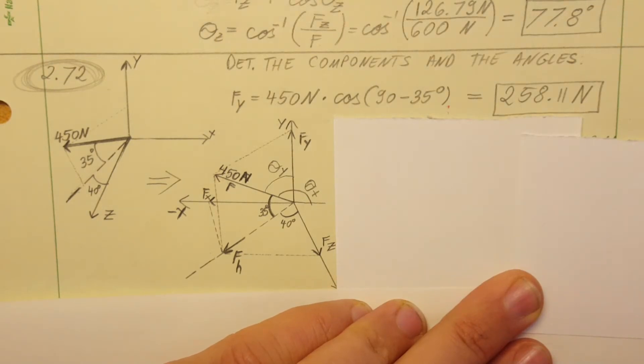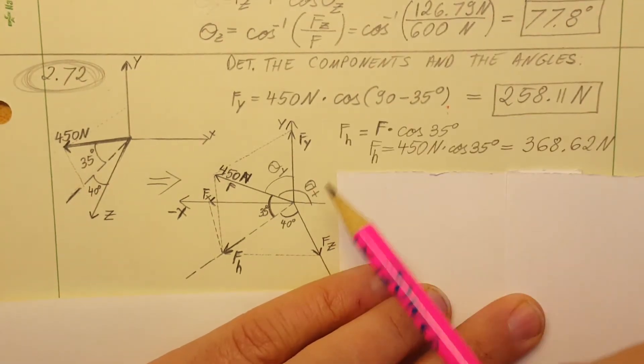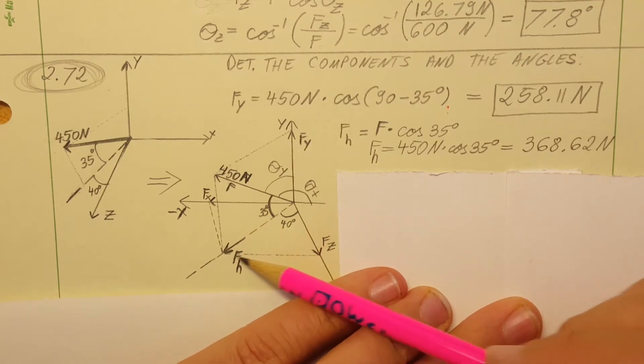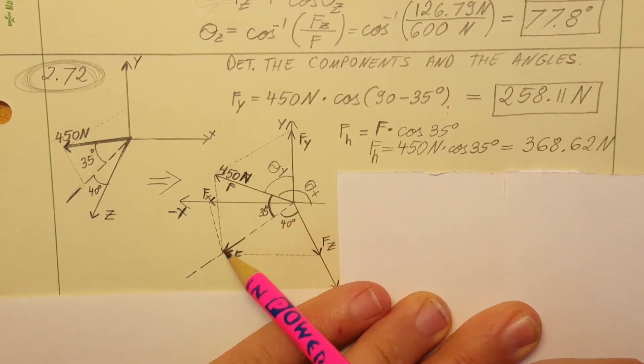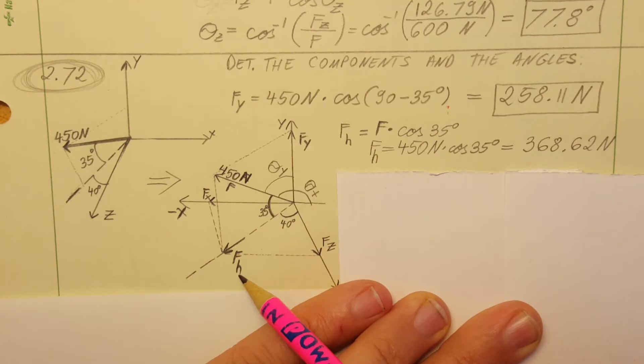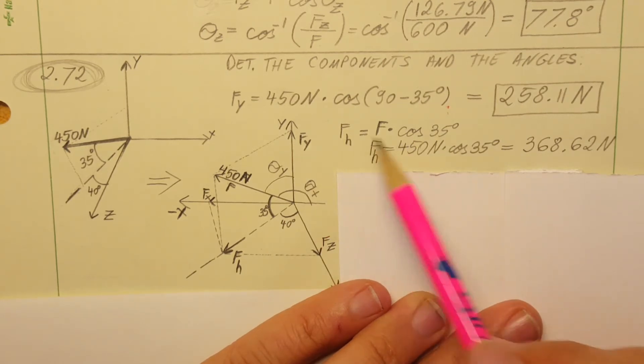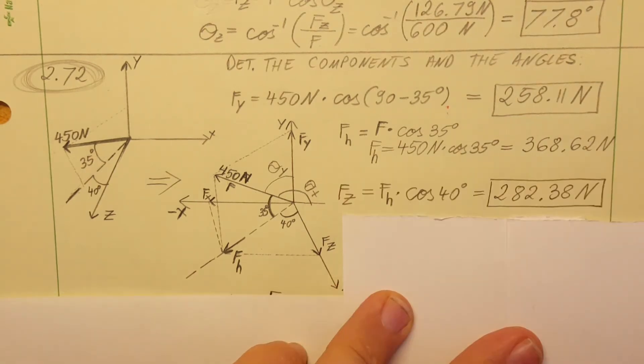Okay now I'm gonna calculate this FH, this is just an intermediary value that I'm gonna use to find F of Z and F of X. I'm gonna use right now this triangle right here from F down to FH which is this one and then back up to the tip of F, and I'm gonna use the value of 35 since we know this angle. I'm gonna use the same formula so FH equals F times cosine 35, plug in and our value is 368. We're gonna use this to find the other two.